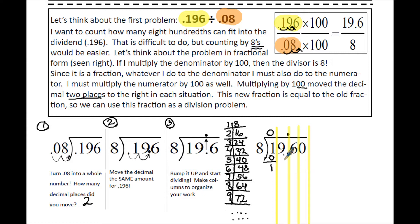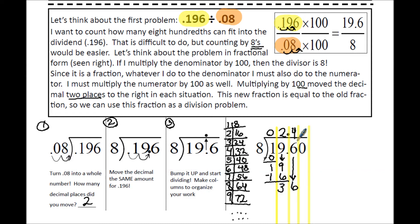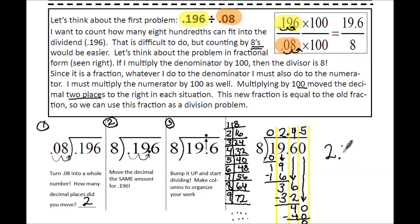We're done with the first column and move to the second. 8 goes into 19 two times, and 2 times 8 is 16 with 3 left over. We combine this column with the next and bring the 6 down. 8 goes into 36 four times — 4 times 8 is 32 with 4 left over. We add a 0 and bring it down. 8 goes into 40 a total of 5 times with 0 left over. Your final answer is 2.45, or 2 and 45 hundredths.